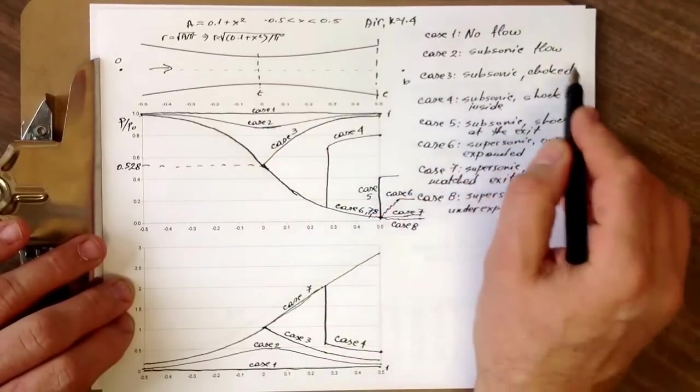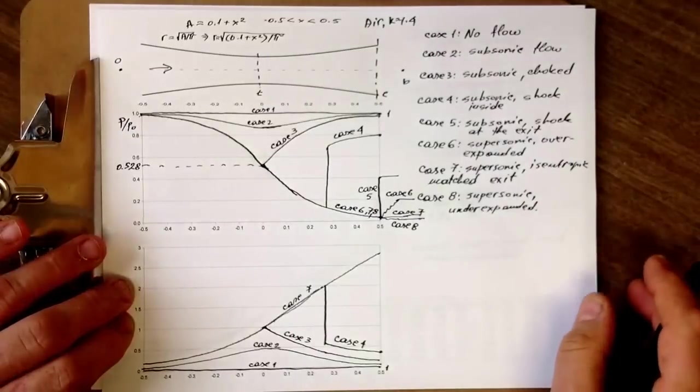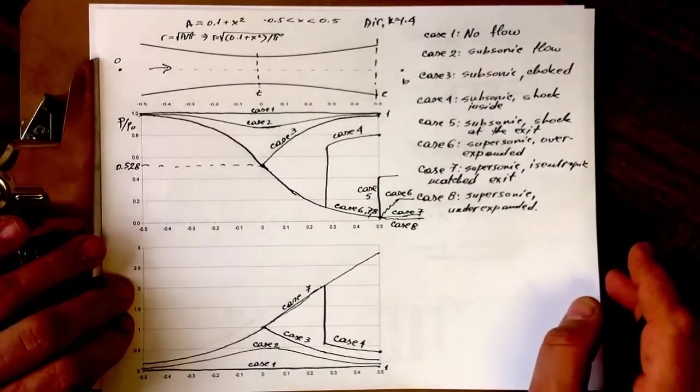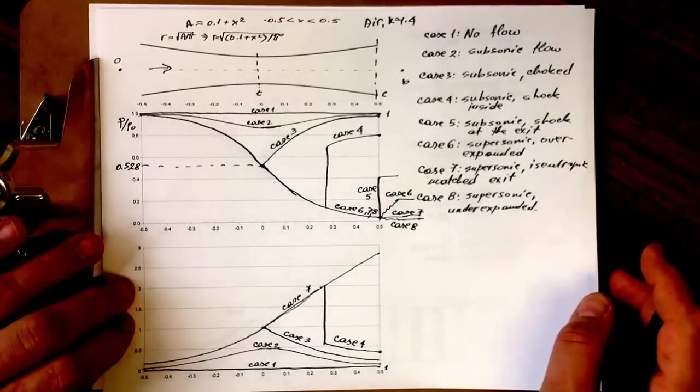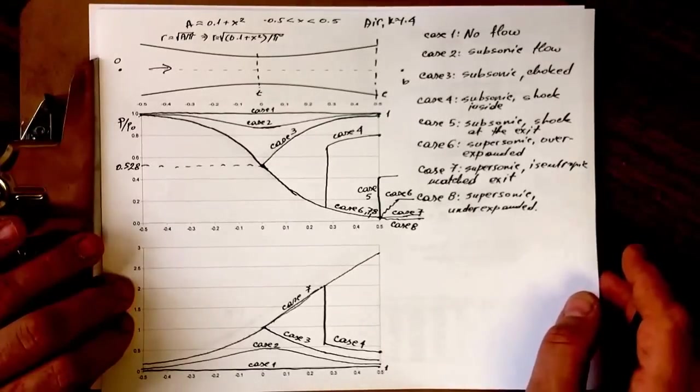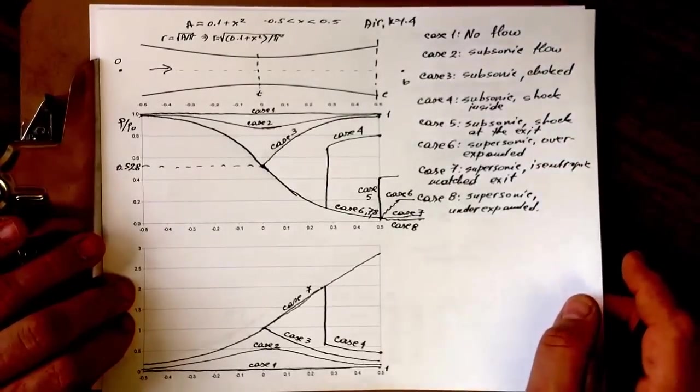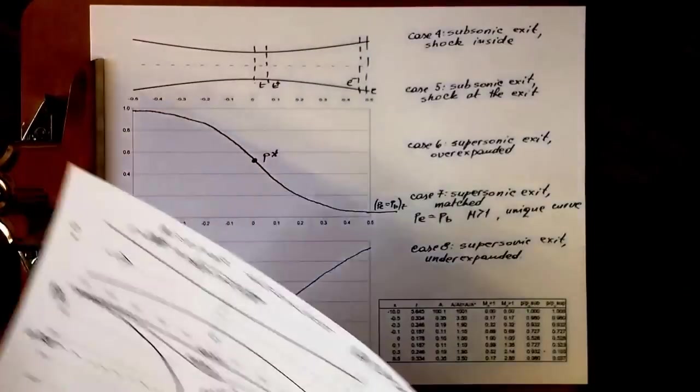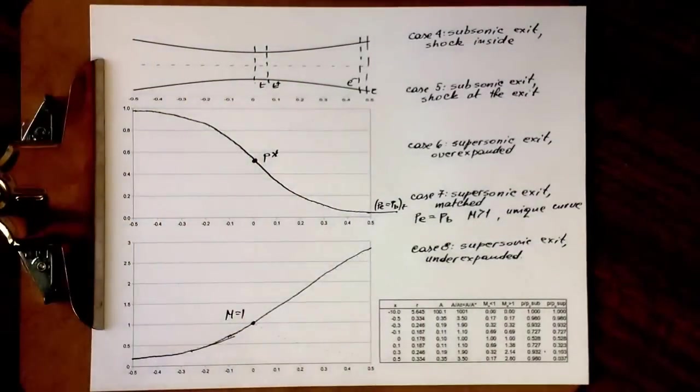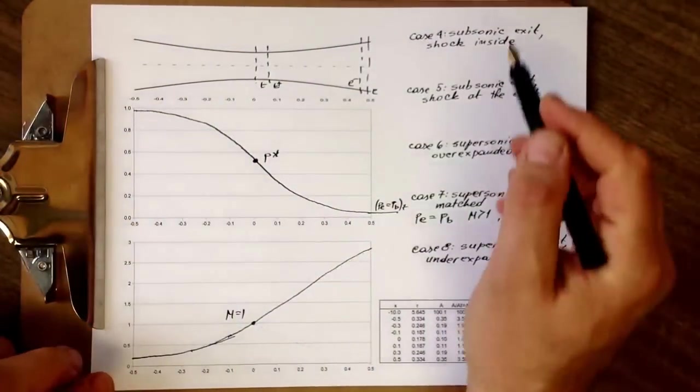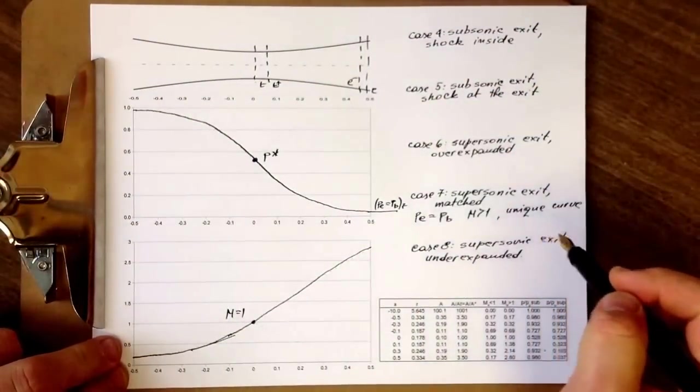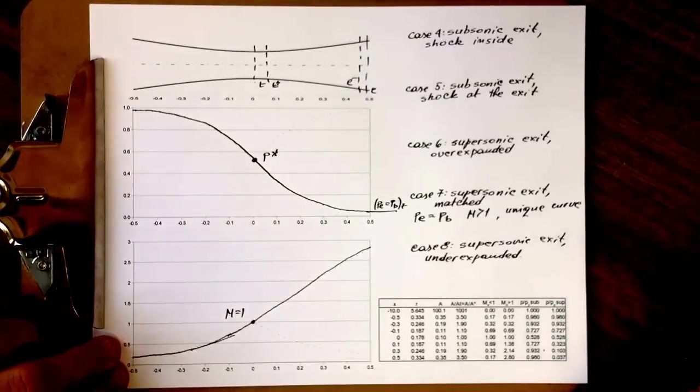The first three cases are covered in part two in more detail. They pertain to subsonic regime and now we're moving to the supersonic regime cases four to eight. In this template I already itemized those four cases. We're going to examine them one by one.